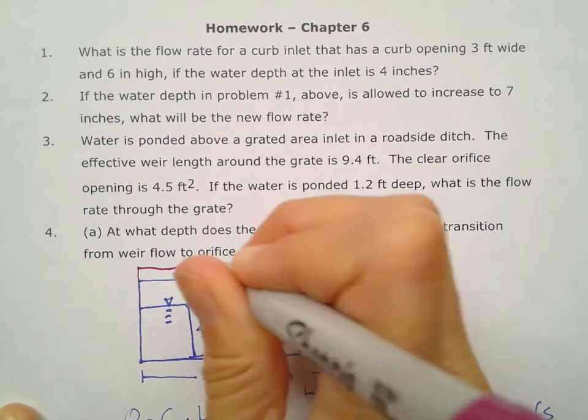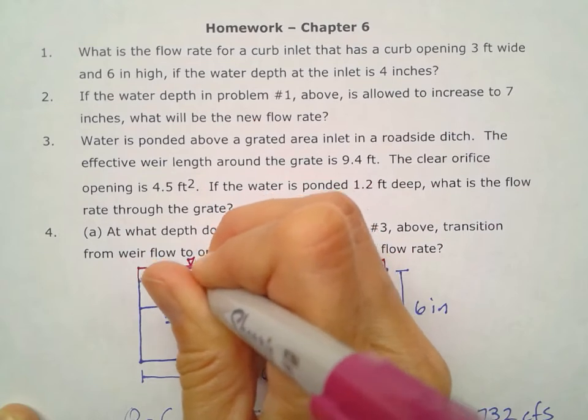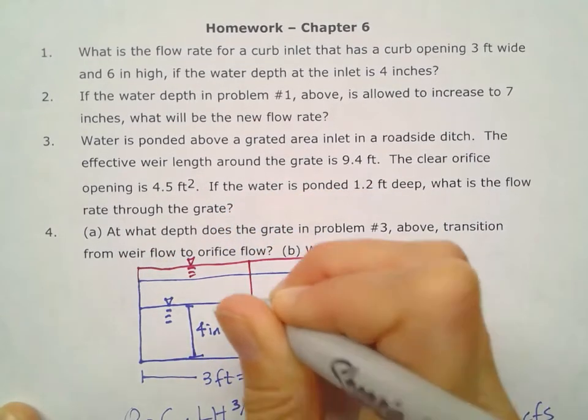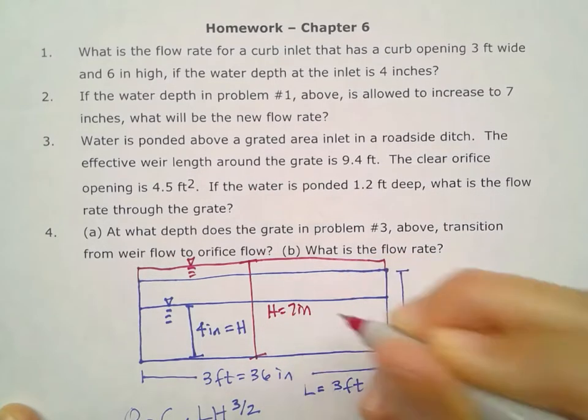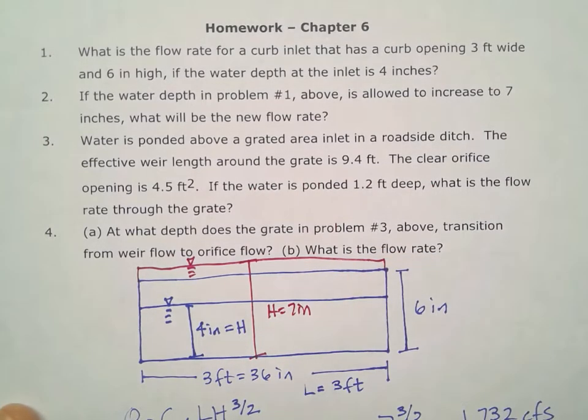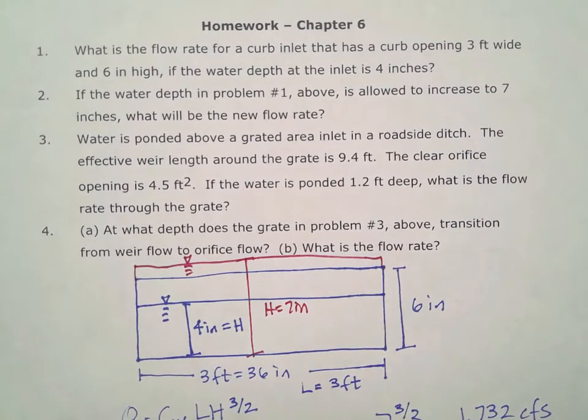So now my height has changed to seven inches for the water. But in order to find my little h, this opening is going to be behaving like an orifice. Since we've got that water over the top, we're no longer in the weir condition, we're in the orifice condition.